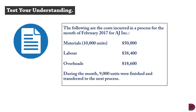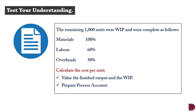Let's test our understanding. The following are the costs incurred in the process for the month of February 2017 for AJ Incorporated: materials — 10,000 units, cost $50,000; labor — $38,400; overheads — $18,600. During the month, 9,000 units were finished and transferred to the next process. The remaining 1,000 units were work in progress: materials fully complete, labor 60% complete, overheads 30% complete. We are to calculate the cost per unit and prepare the process account.